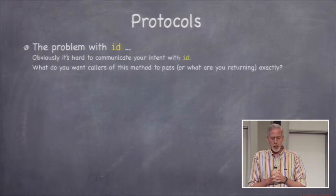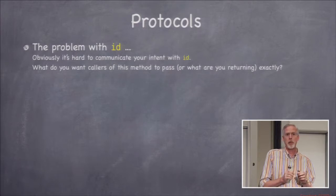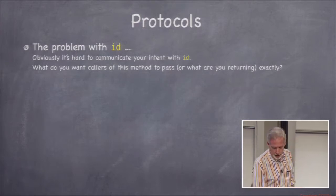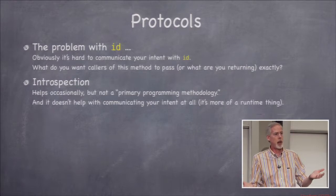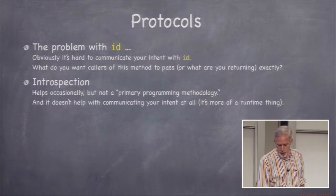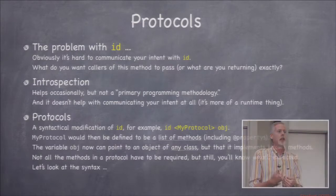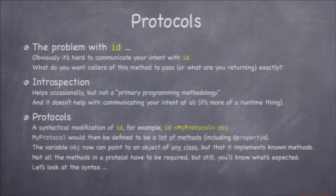The first Objective-C thing we're going to talk about is protocols. This is a way to make ID a little more useful by making it a little safer. We already have introspection to make ID safer — we know it's a pointer to some object, we can ask at runtime what kind of object it is and what methods it responds to. But it would be better if in our code we could document, in a way both readers and the compiler can understand, what methods we plan to call on that ID. That's what protocols do.